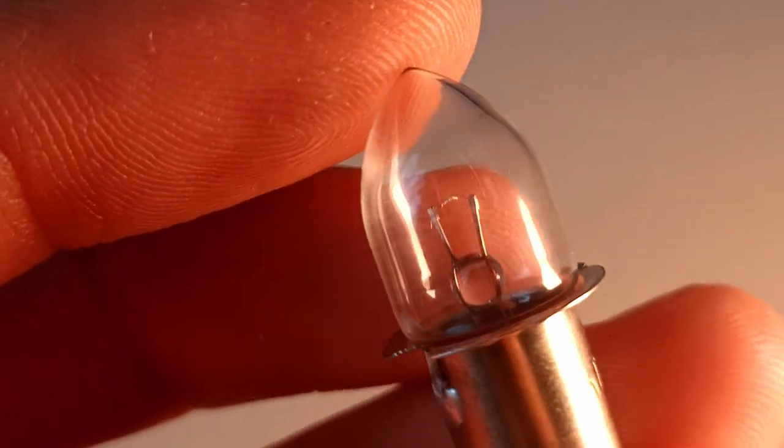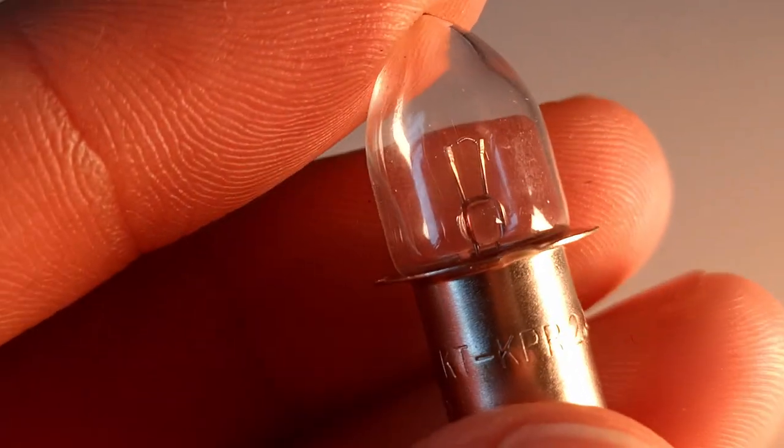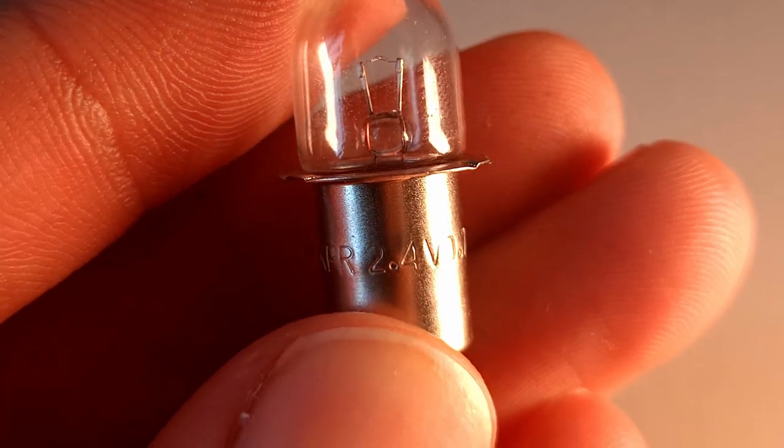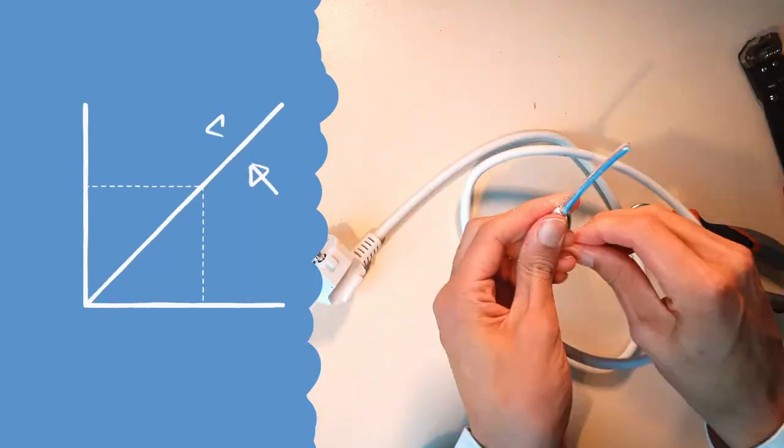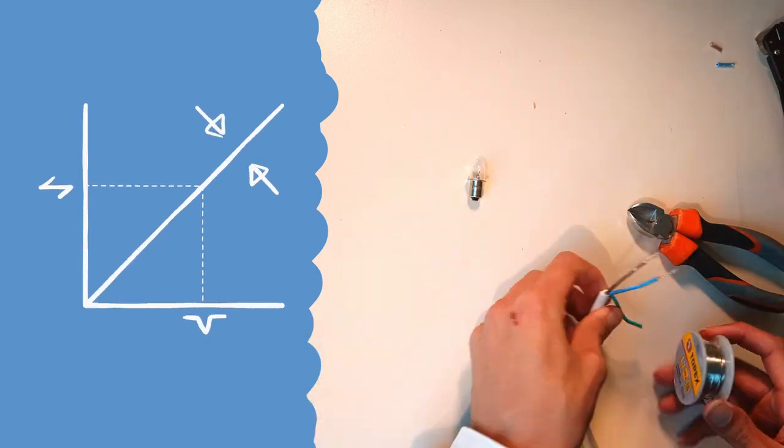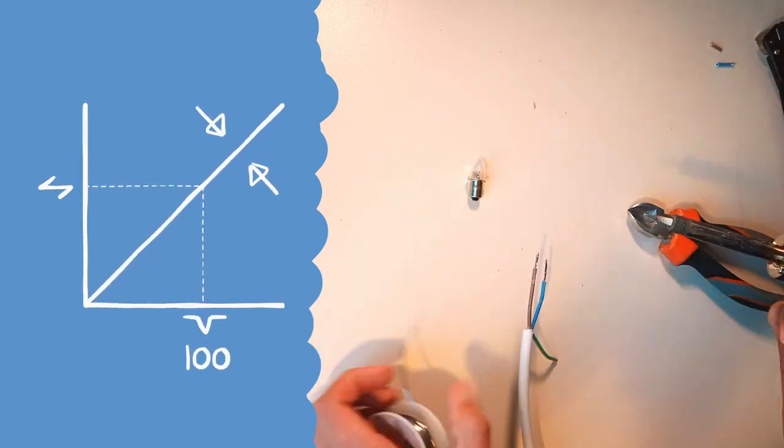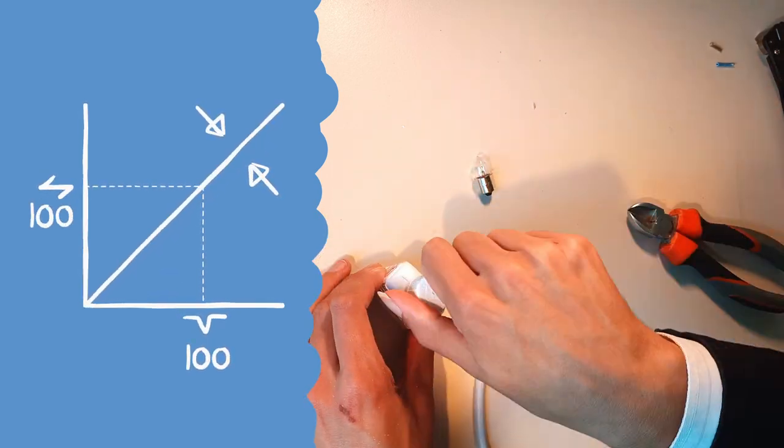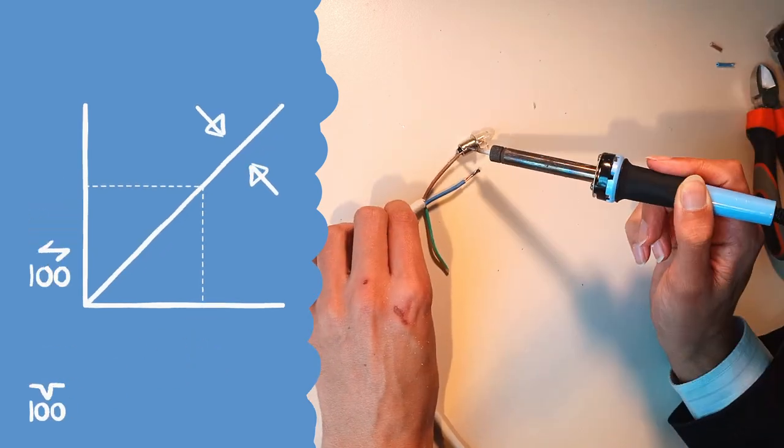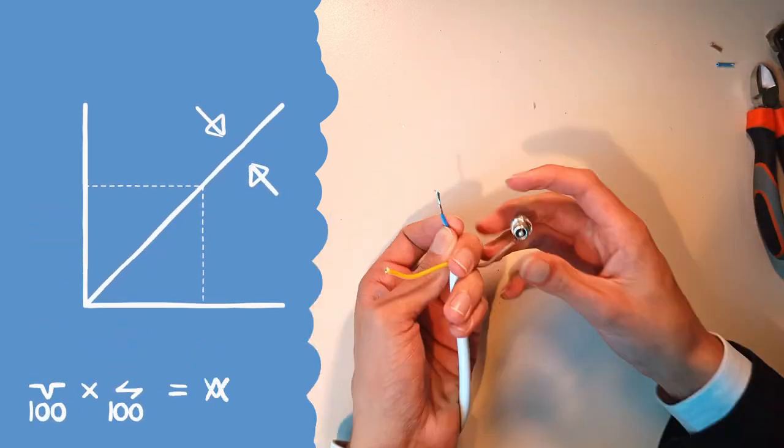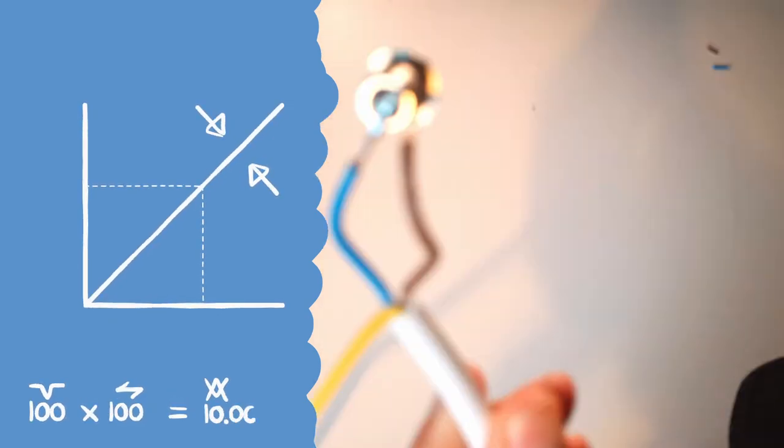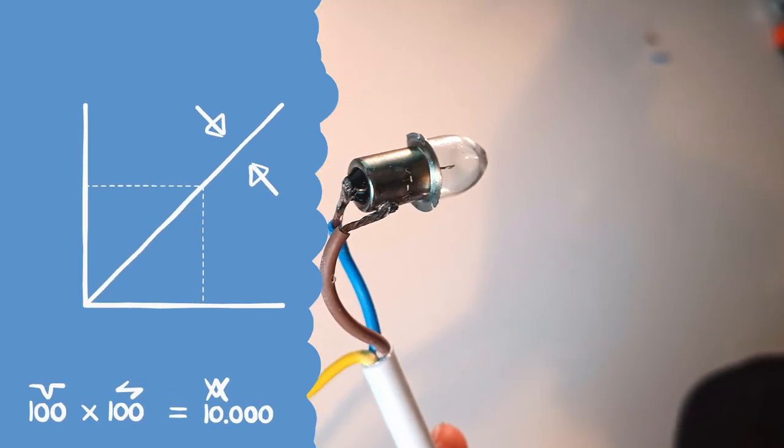But what happens if your light bulb isn't made for 220, but for 2.4? The ratio between voltage and current in a light bulb is fixed. So if I provide 100 times the voltage, I will also get 100 times the current. And since voltage times current is watts, the light bulb will have to handle 10,000 times the power it was made for.